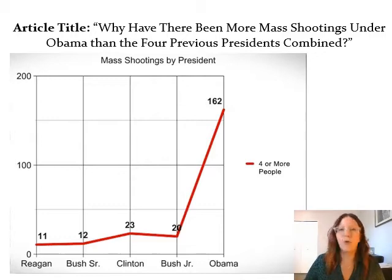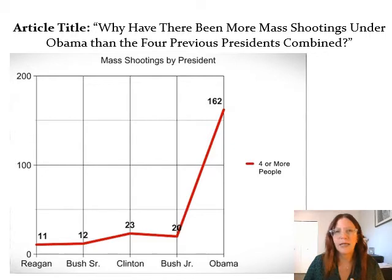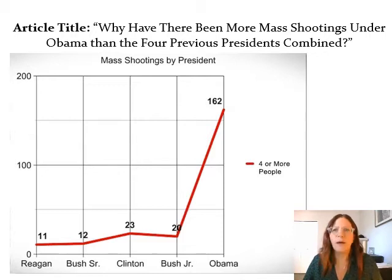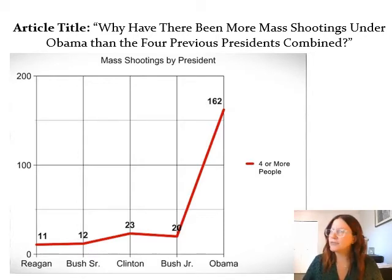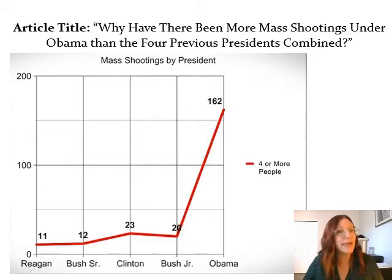The graph shows mass shootings — defined as four or more people in one setting — with Reagan at 11, Bush senior 12, Clinton 23, Bush junior 20, and Obama at 162. This almost suggests that the minute Obama walked into the White House he was handing out guns. This should be an automatic trigger for you to question: where is this data coming from? Has there really been 162 mass shootings? This seems like a huge jump, so you want to start questioning how they're defining mass shootings.